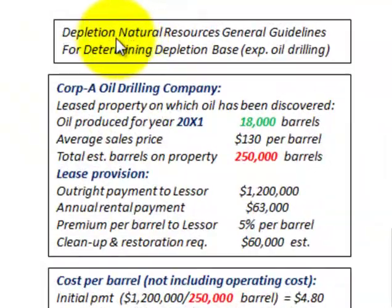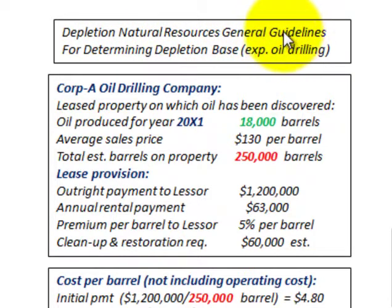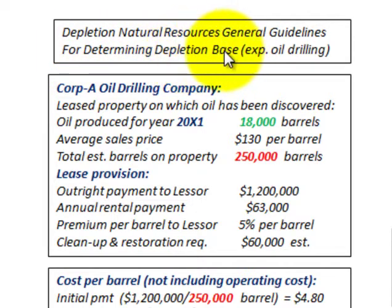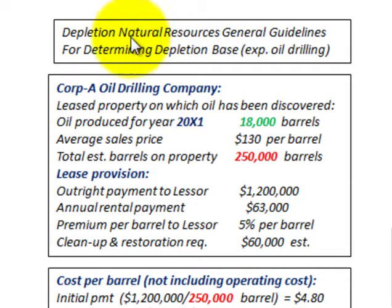What we're going to be going through here is the depletion of natural resources and just looking at the general guidelines that we'd be using for determining the depletion base. It acts as an accumulated depreciation account on our natural resource.